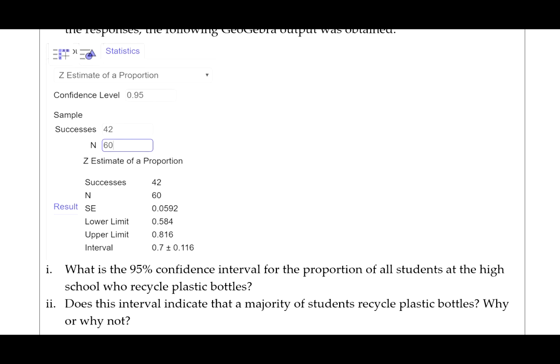So here's the output, and the question says, what is the 95% confidence interval for the proportion of all students at the high school who recycle plastic bottles? So again, we can see the confidence interval right here, the lower and upper limits. We know this is a 95% confidence interval, which is what we're being asked for. So 0.584 up to 0.816.